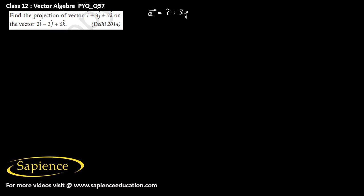Here we have to find the projection of vector a on vector b. Vector a is given as î + 3ĵ + 7k̂, and we have to find its projection on vector b, which is 2î - 3ĵ + 6k̂.